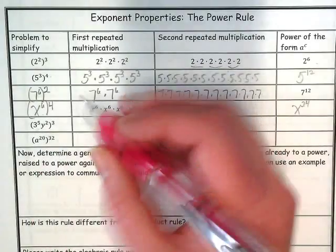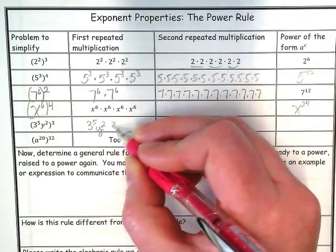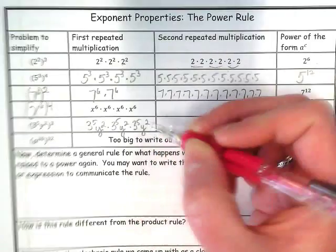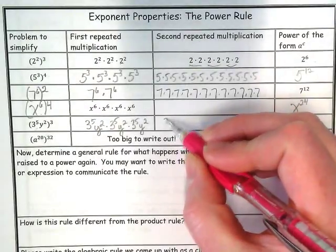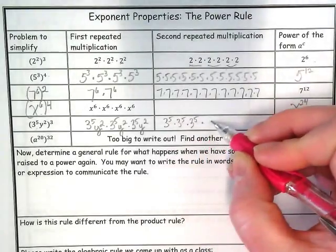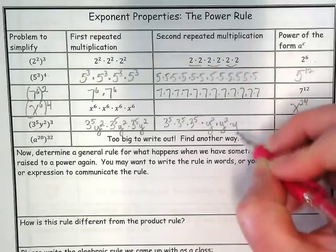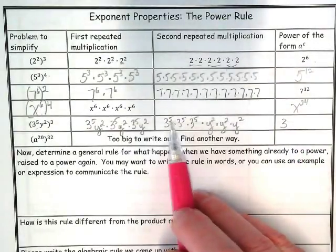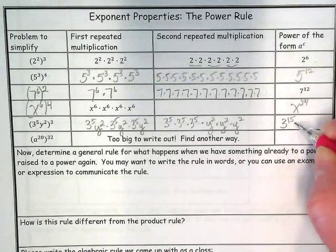Let's write this one out. We've got 3 to the 5th and Y to the 2nd. We're not going to write all of these out, but we are going to regroup them. We have 3 to the 5th times 3 to the 5th times 3 to the 5th and Y to the 2nd times Y to the 2nd times Y to the 2nd. And what do we end up with? Okay, how many 3's would there be totally if I had to write these all out? 15. And how many Y's? 6.